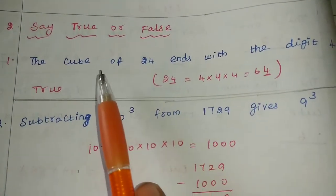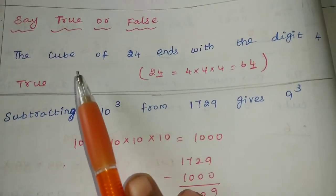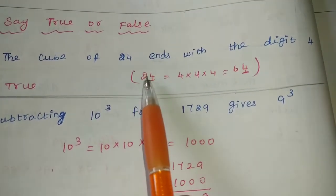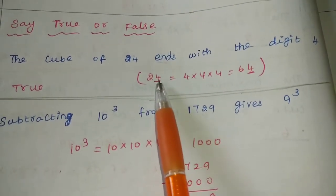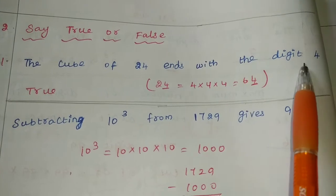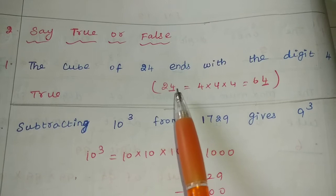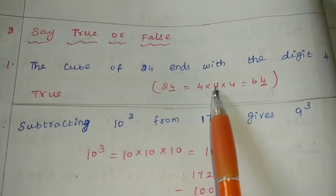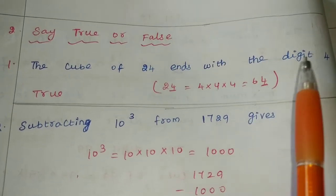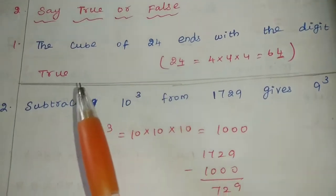See the first one: the cube of 24 ends with the digit 4. So, 24 ends with the digit 4, so the answer is correct — the statement is correct. The answer is True.